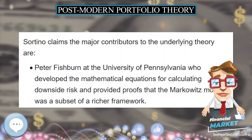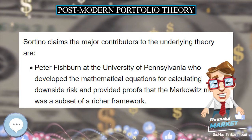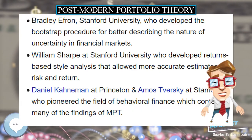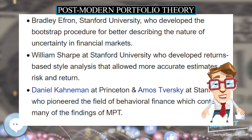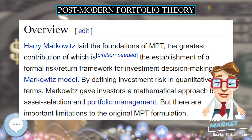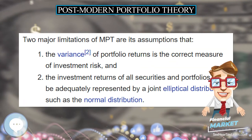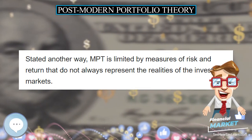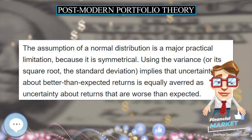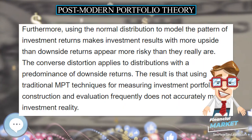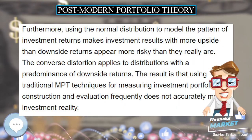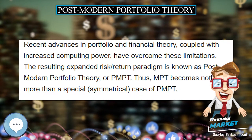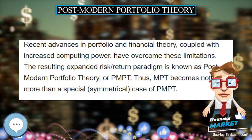In 1987, the Pension Research Institute at San Francisco State University developed the practical mathematical algorithms of PMPT that are in use today. These methods provide a framework that recognizes investors' preferences for upside over downside volatility. At the same time, a more robust model for the pattern of investment returns, the three-parameter log-normal distribution, was introduced. Downside risk is measured by target semi-deviation, the square root of target semi-variance, and is termed downside deviation. It is expressed in percentages and therefore allows for rankings in the same way as standard deviation. An intuitive way to view downside risk is the annualized standard deviation of returns below the target.